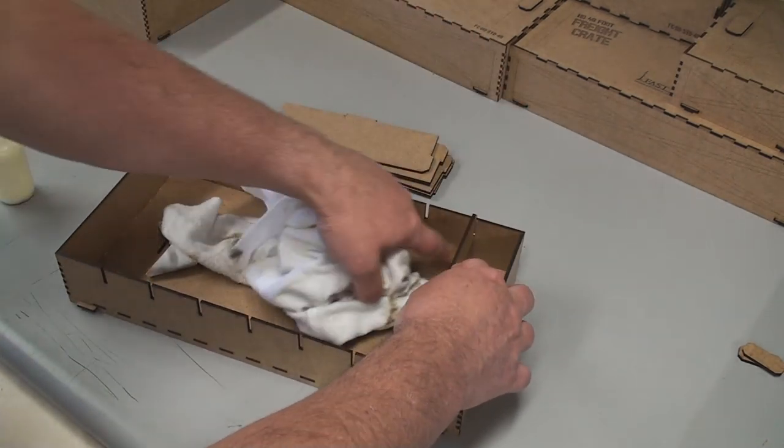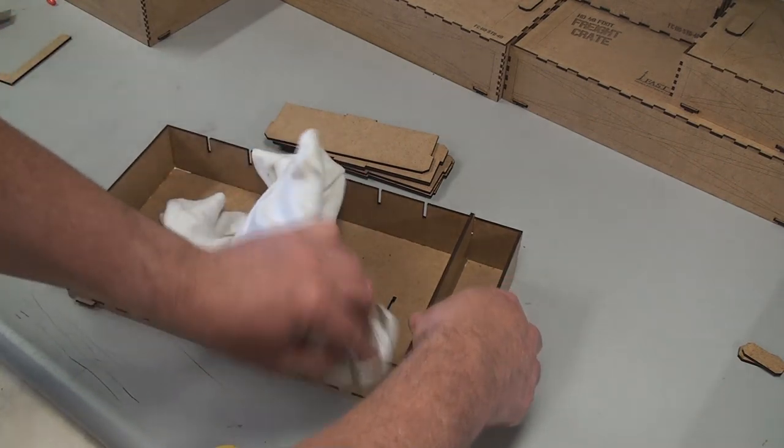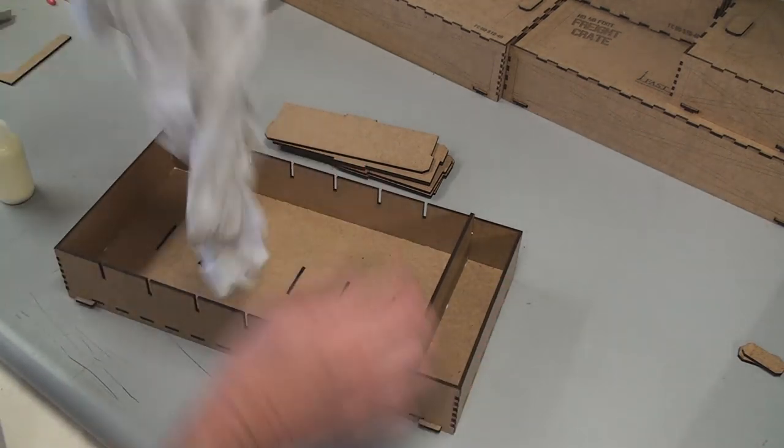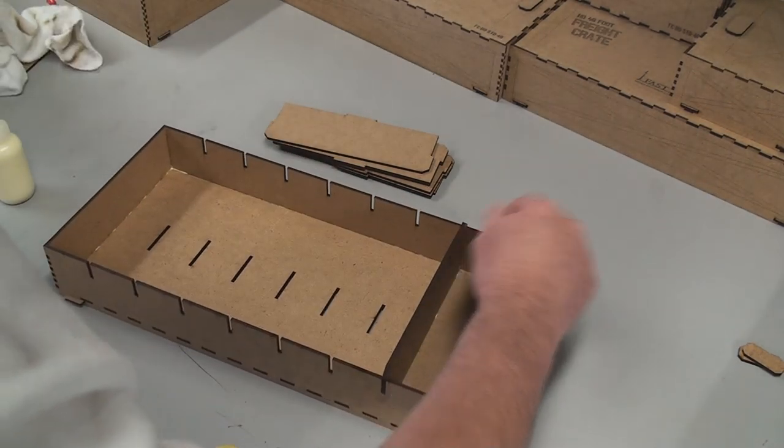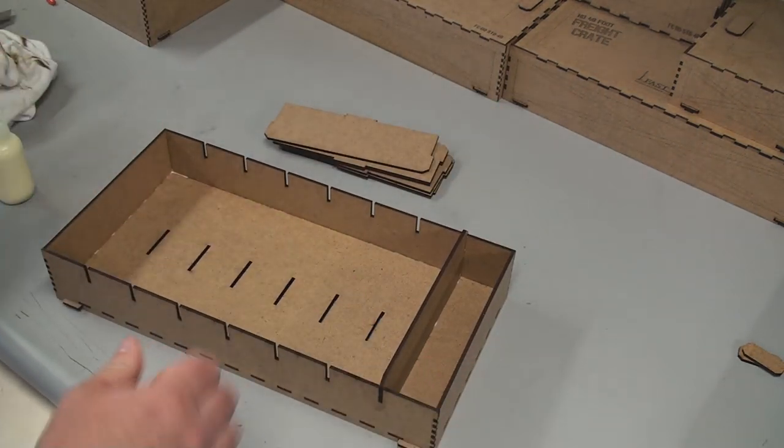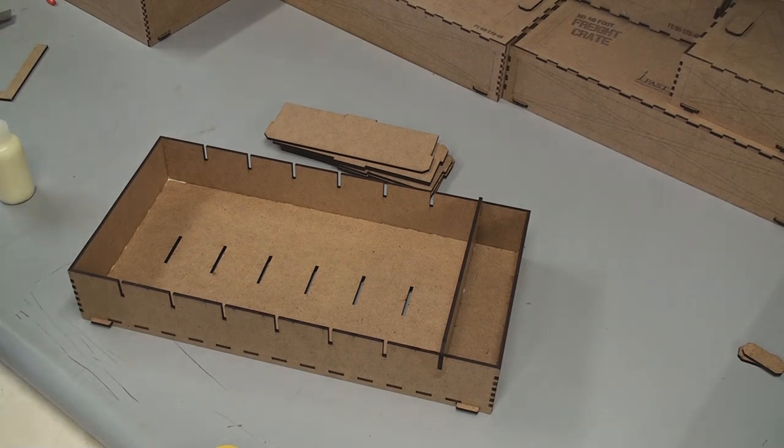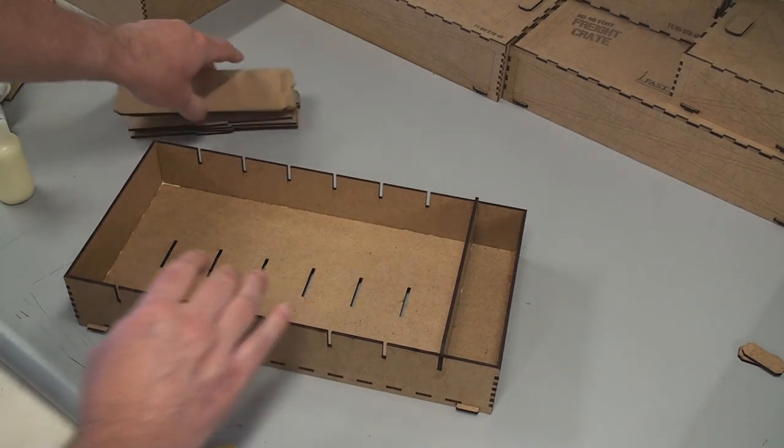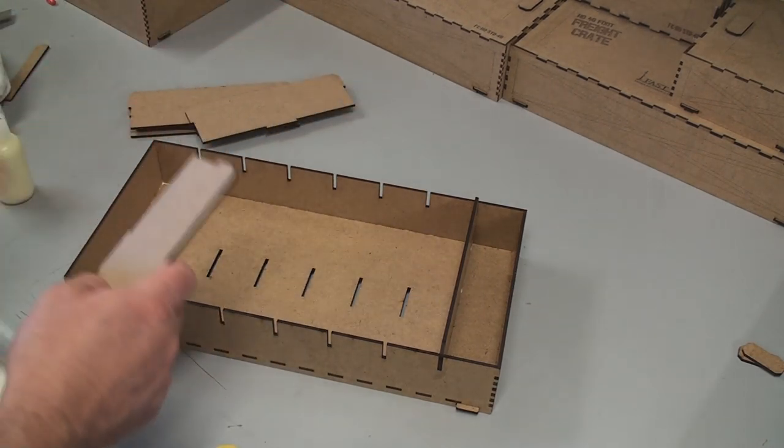And then clean up whatever excess glue is on there. You can use the glue cleaning tool if you want to get down in the corners. I don't really worry about it because when this dries up, it's down in the bottom. You won't see it and it won't interfere with anything. So, now we just work our way down and glue all these in place.